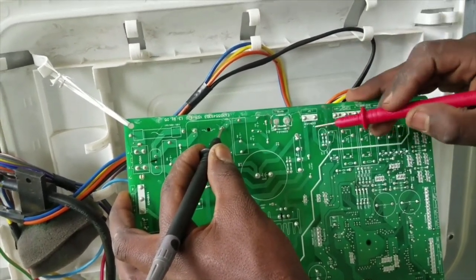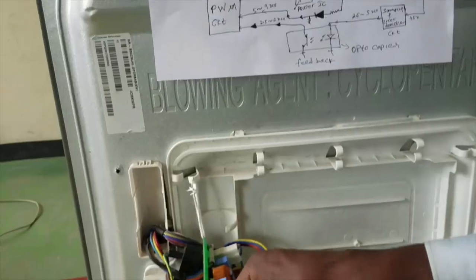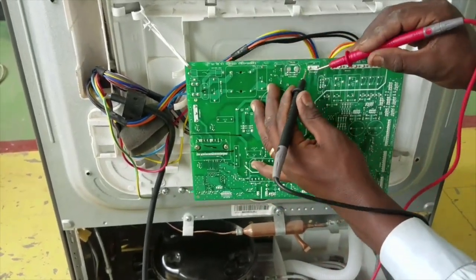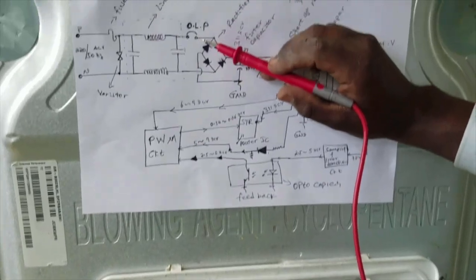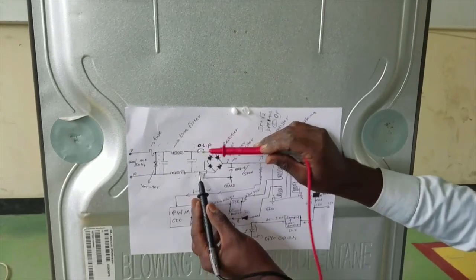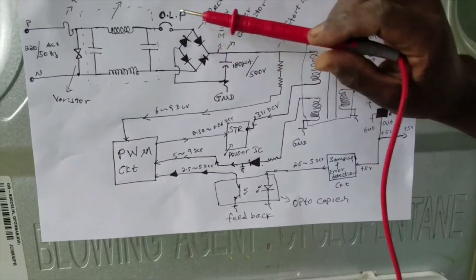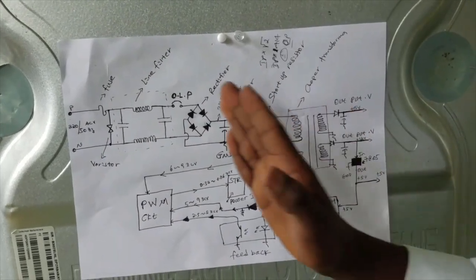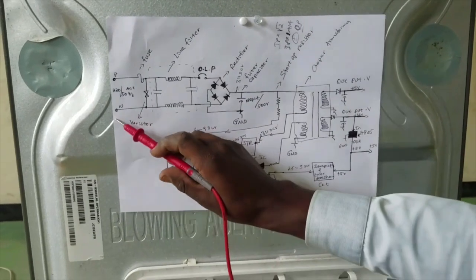The OLP is not giving continuity, so maybe the problem is at the OLP — it may not be connected properly. The OLP is confirmed not giving continuity, so the rectifier will not receive 220 volts. We have 220 voltage at the input, but the rectifier will not receive it. If the rectifier does not receive 220 volts, the rest of the circuit will not work because it doesn't receive any power.